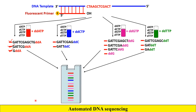Specifically, ddATP is labeled with a red color dye, ddCTP is labeled with a blue color dye, ddGTP is labeled with a magenta color dye, and ddTTP is labeled with a green color dye. We use these fluorescently labeled dideoxy nucleotide triphosphates so that the system can automatically detect the color of each dye.